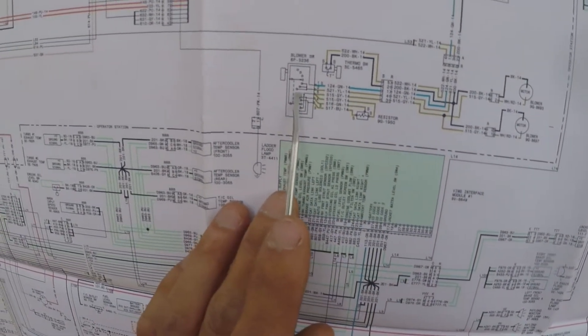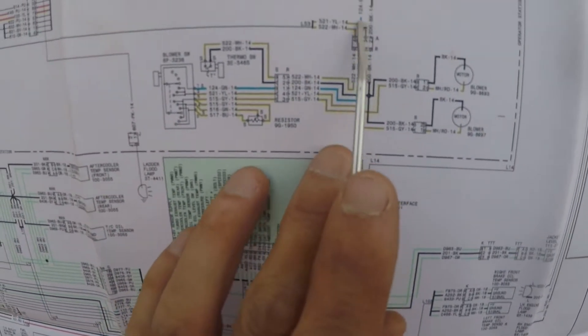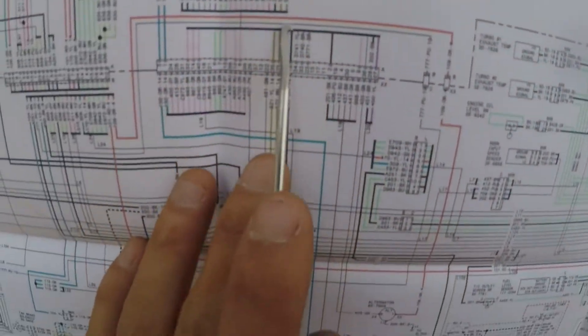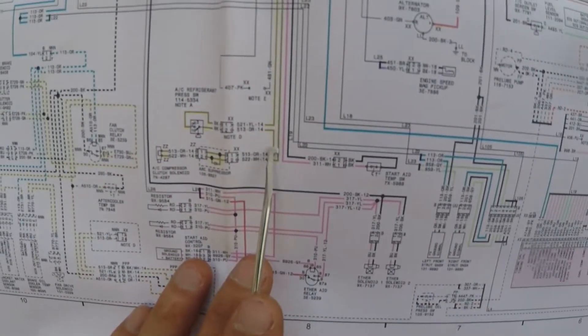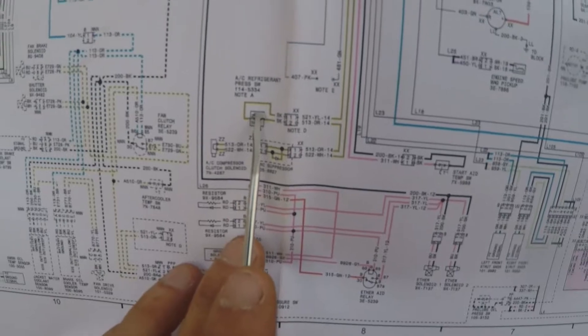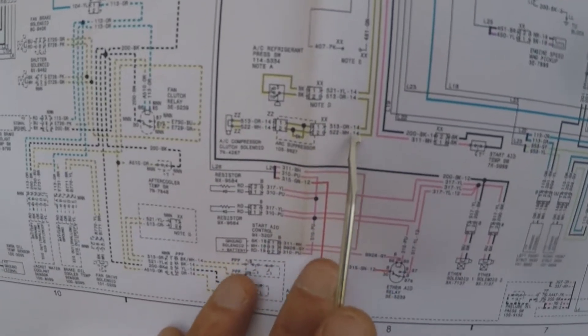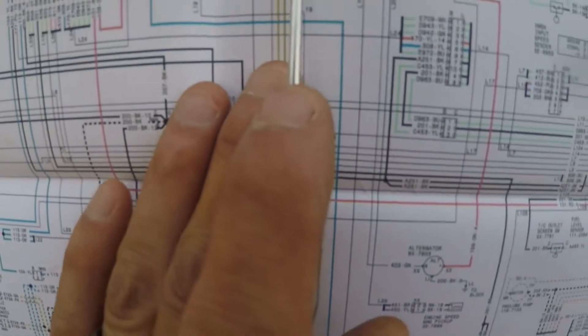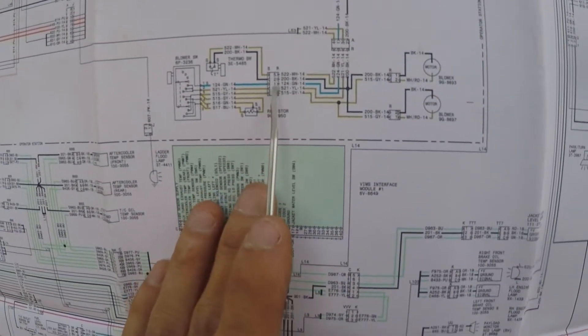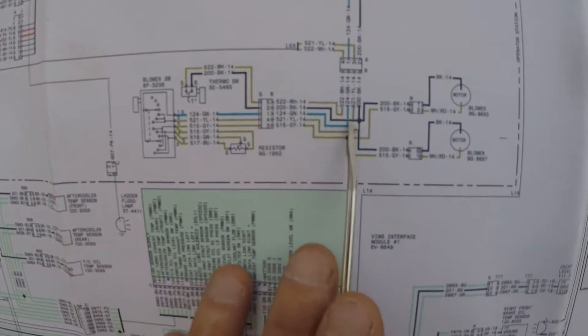124 green goes to our blower motor switch, comes out of our switch on 521 yellow. Here's 521 yellow right here. 521 yellow goes to our AC refrigerant pressure switch, comes out of that switch 513 orange, goes to our compressor clutch. Out of our clutch, come back up here 522 white, right over here 522 white. Goes to our thermostat switch, out from the thermostat switch goes to ground.